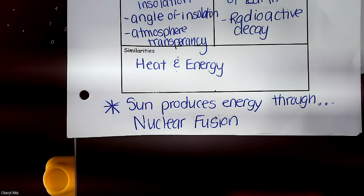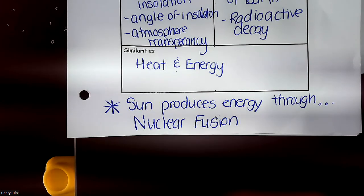The sun is made out of mostly hydrogen atoms. What the sun does — something we actually cannot do here on Earth yet — it takes two of those hydrogen atoms and fuses their nuclei together. When you do that you create a huge amount of energy. Those two atoms fuse together to make a new helium atom. That's how the sun and all stars create their energy through nuclear fusion. Now let's go over your homework.